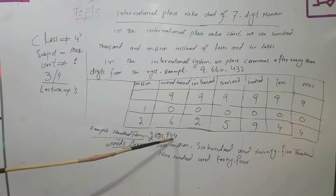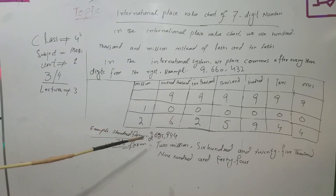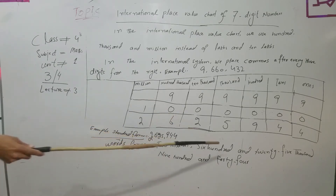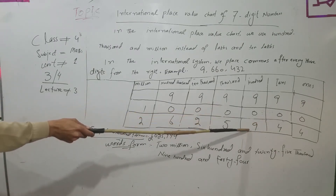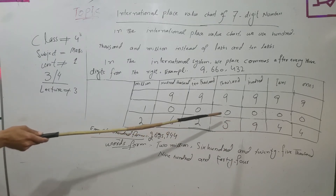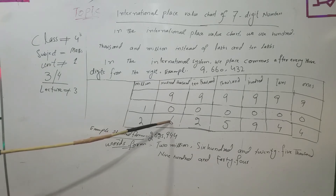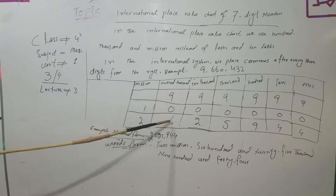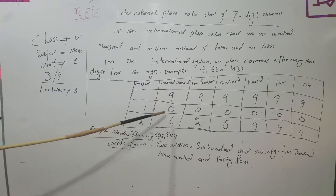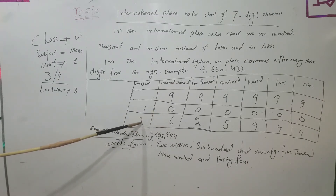Now we look at the example number placed in the chart: nine hundred and forty four. In the chart: ones place is 4, tens place is 4, hundreds place is 9. Then five thousand, two ten-thousands. In the Pakistani place value system, six hundred thousand equals six lakhs — six delta equals six lakhs.